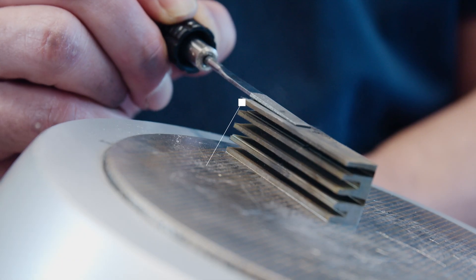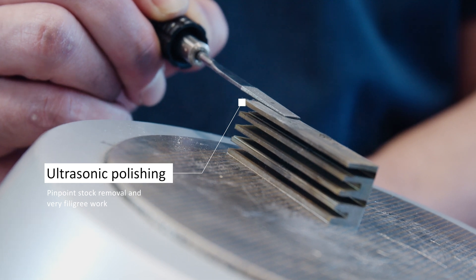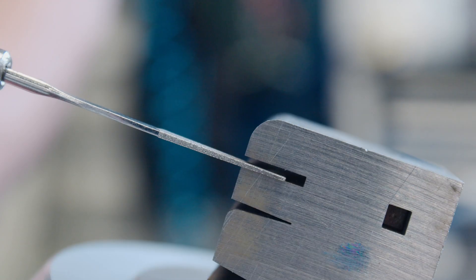During ultrasonic polishing, an abrasive tool is caused to vibrate rapidly. This allows pinpoint stock removal and very filigree work.